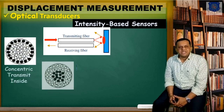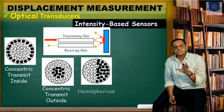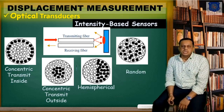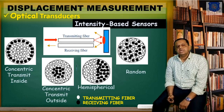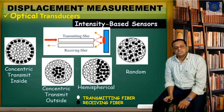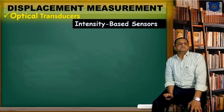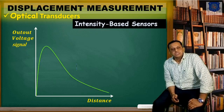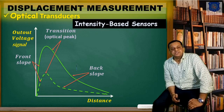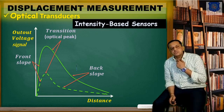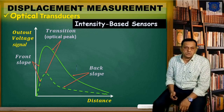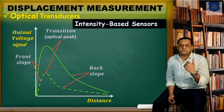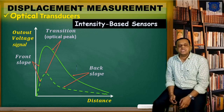Looking at the diagram, there are different fiber topologies: concentric, concentric with carbon outside, inside, hemispherical, and angled. The black spots represent receiving fibers and white spots are transmitting fibers. A transfer factor is generated, and the output voltage versus distance has a characteristic curve with a maximum optical peak in the middle portion, along with a back slope and front slope. The output signal is directly converted from the light intensity received by the detector.